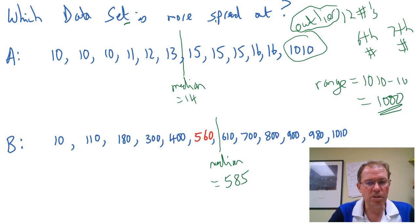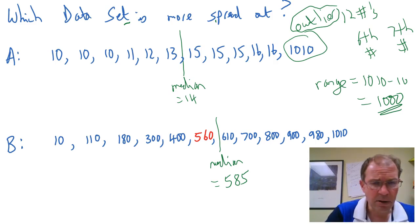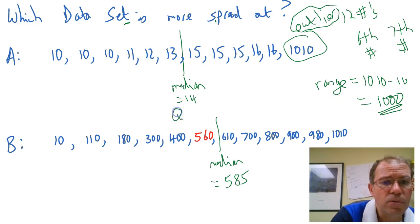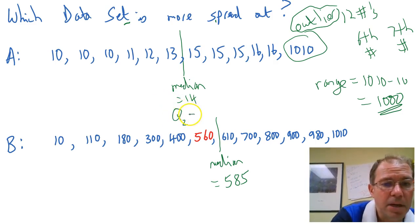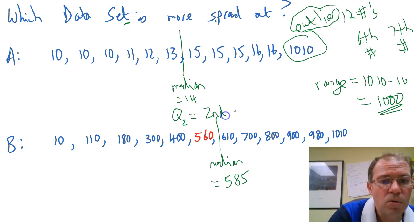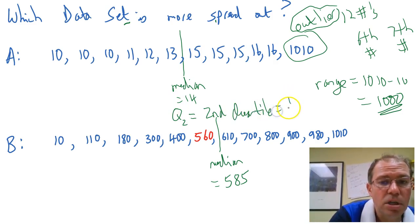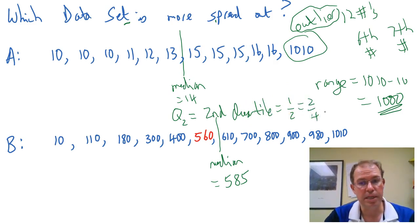So there's another way to measure spread and that's what I'd like to show you. Now, the median is also called Q2 — the second quartile — because two quarters of the way up is, of course, a half of the way up. A half is two quarters, so Q2 is the second quartile.